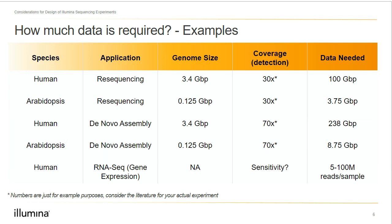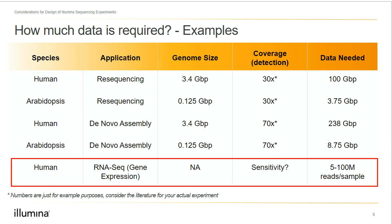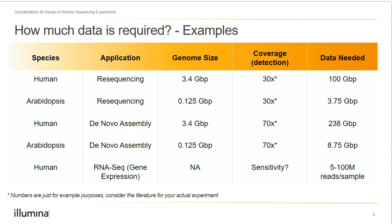Finally, let's think about RNA-seq or gene expression experiments. Again, we'll consider the human species as our example. Since our goal is to analyze transcript expression, the genome size isn't really taken into account, and coverage will depend on the sensitivity we're looking to obtain. However, we can say that we'll need about 5 to 100 million reads per sample. For more on coverage, I'll link you to our coverage calculator in the resources section.